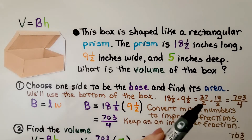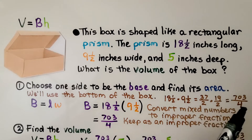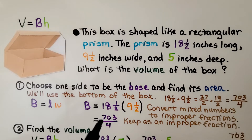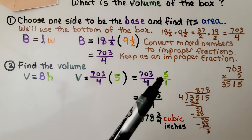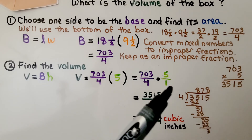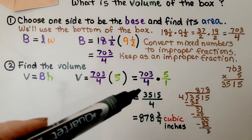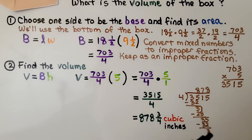18.5 becomes 37 halves, and 9.5 becomes 19 halves. We multiply 37 times 19 and we get 703, and we multiply 2 times 2 and that's 4. We have 703 fourths, and we keep this as an improper fraction because we need to multiply again. By keeping it as an improper fraction, we can now multiply it by 5. We write 5 as 5 over 1 and multiply straight across. 703 times 5 is 3,515 over 4. We have 3,515 divided by 4, and we find out that it's 878 with a remainder of 3 — that's our numerator, and 4 is our denominator. We have 878 and three-fourths cubic inches for the volume of that box.